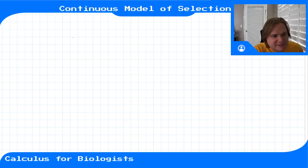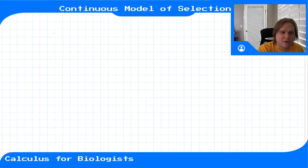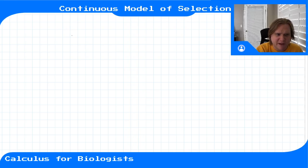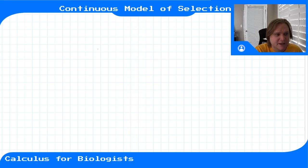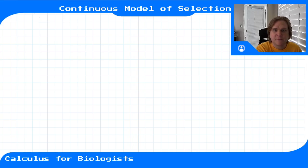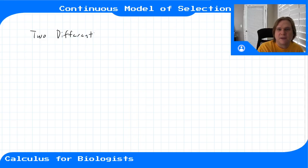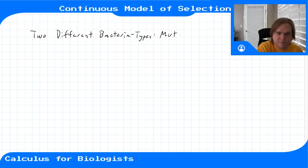Another nice example to see how tools for analyzing autonomous differential equations work together is a continuous model of selection. Earlier in this class we talked about a discrete time model for selection where we had two populations of different types of bacteria — a mutant and a wild type — where one has some survival advantage over the other. We want to see how, in a given petri dish, if one population is growing faster it will overtake the other. Now we'll do the same sort of model but with differential equations.